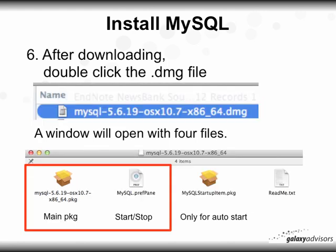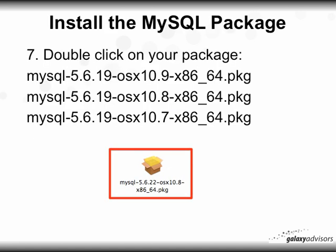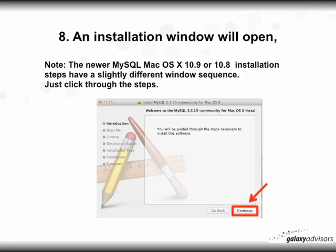Alternatively, in step six for the 10.7 version, you'll see four packages. You're going to install the main package and the start-stop package. It depends on what version you've downloaded. Double-click on the package you've downloaded, and a window will open followed by a series of installation sequence steps. Just click through those steps — some of them vary between packages, but this is generally the sequence you'll go through.